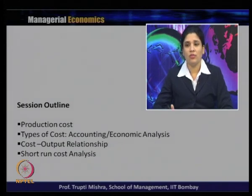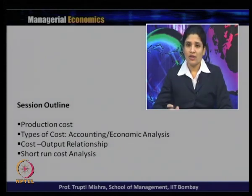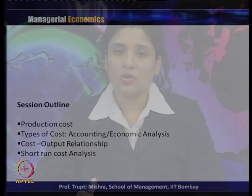Essentially the relationship between the average cost — that is average variable cost, average fixed cost, marginal cost — and then we will see how from the total cost we derive the different kinds of average cost. To start with, we will see what is the need or what is the motivation to study this production cost.